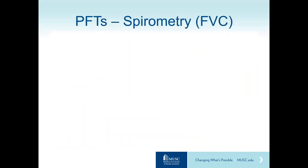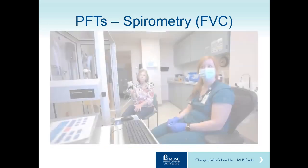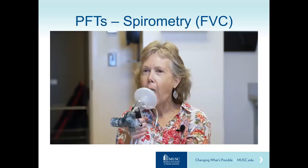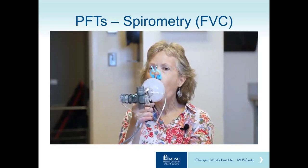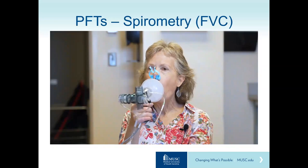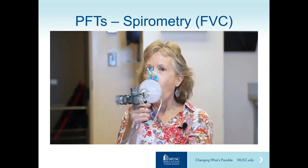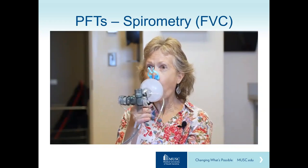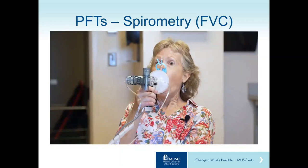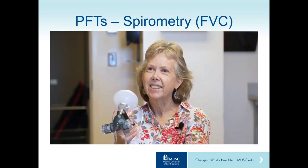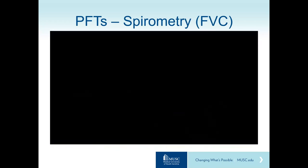Spirometry measures factors including the forced vital capacity (FVC). During the test, the patient breathes normally, then takes a big breath in and blows out forcefully and completely, holding as long as possible until fully empty, then takes a big breath back in. The technician encourages maximal effort throughout the maneuver.